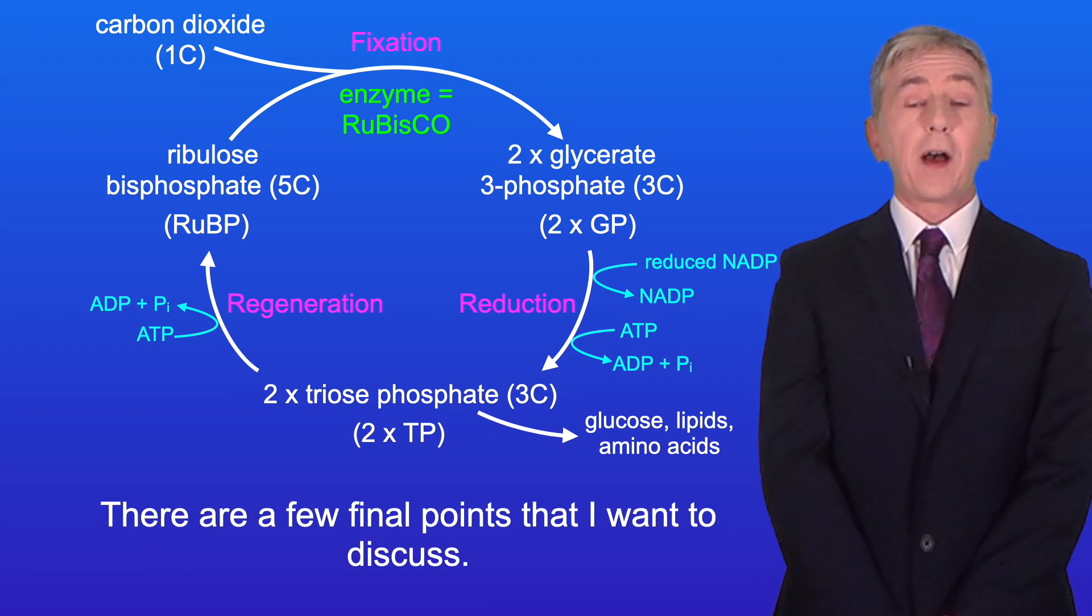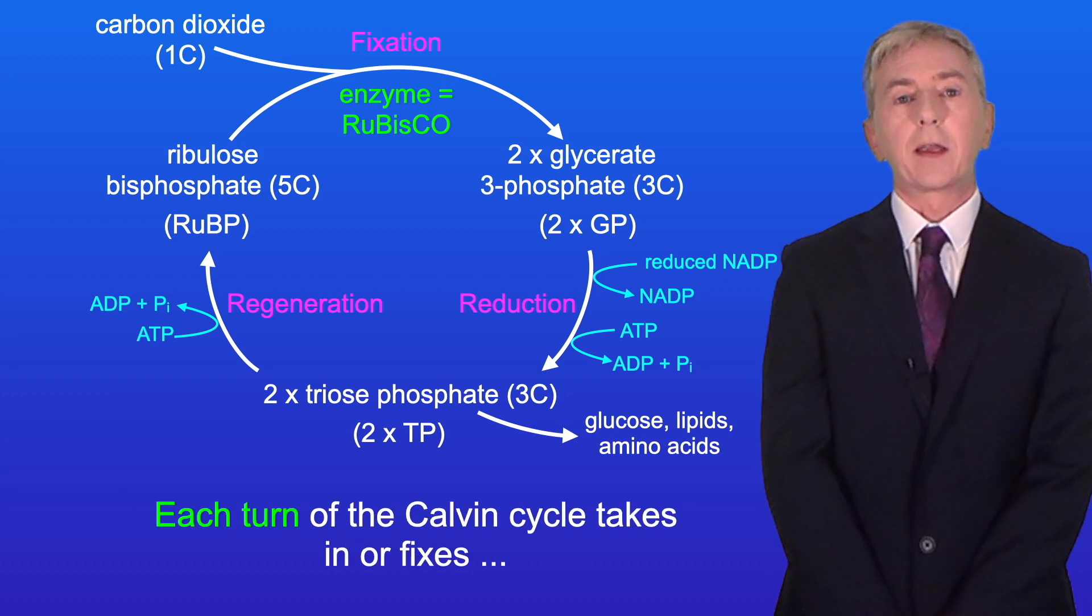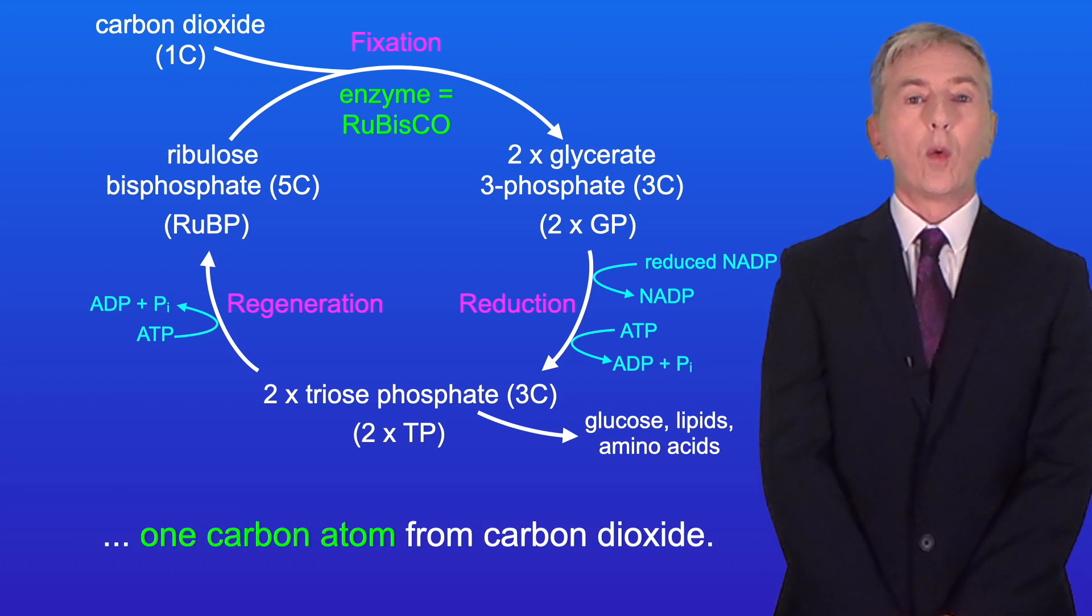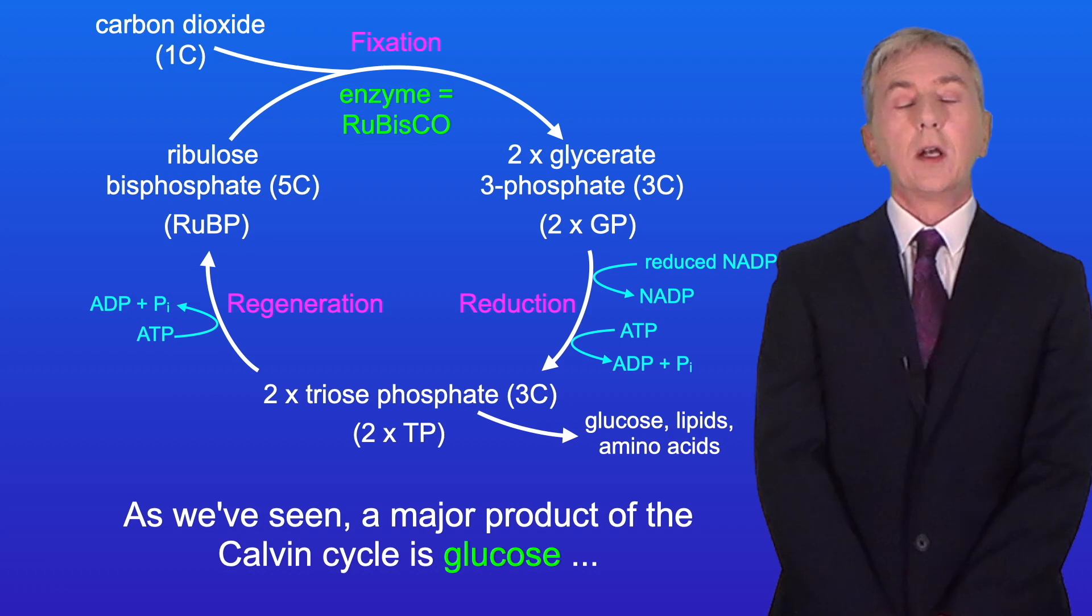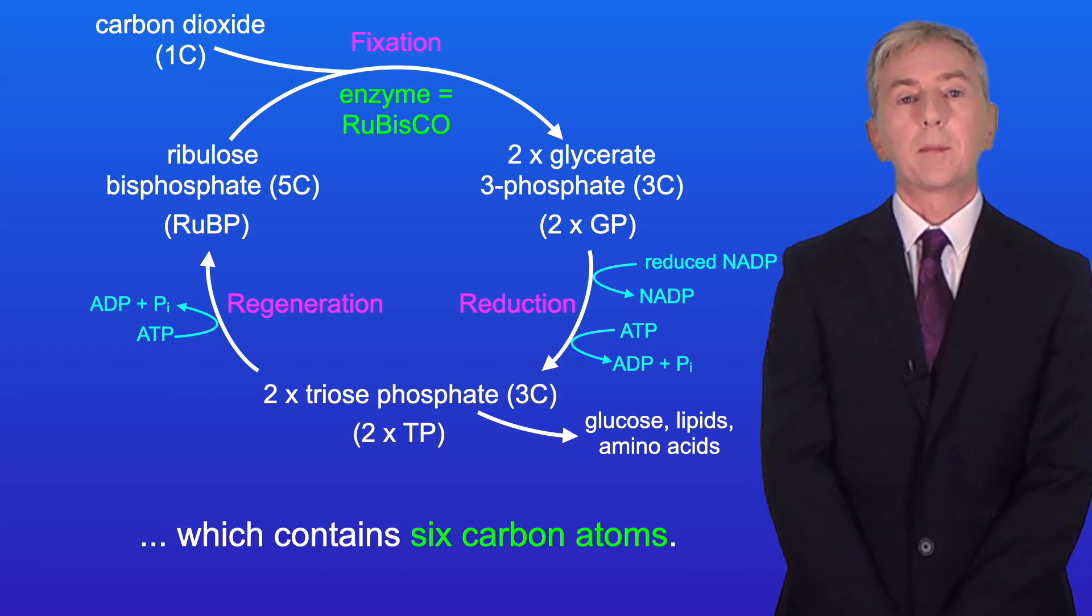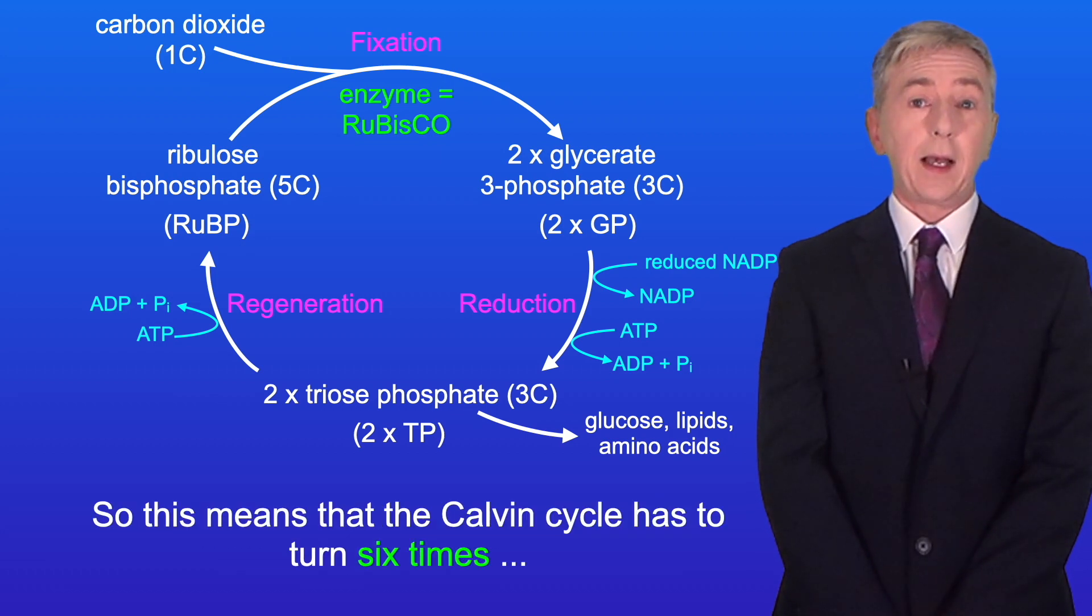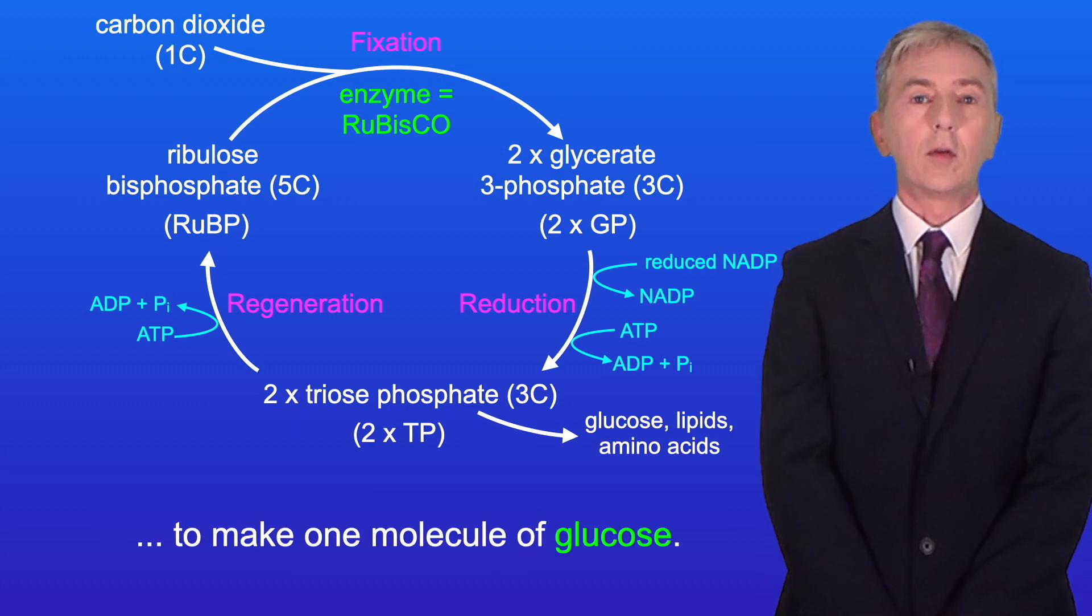Now, there are a few final points I want to discuss. Each turn of the Calvin cycle takes in, or fixes, one carbon atom from carbon dioxide. As we've seen, a major product of the Calvin cycle is glucose, which contains six carbon atoms. So this means that the Calvin cycle has to turn six times to make one molecule of glucose.